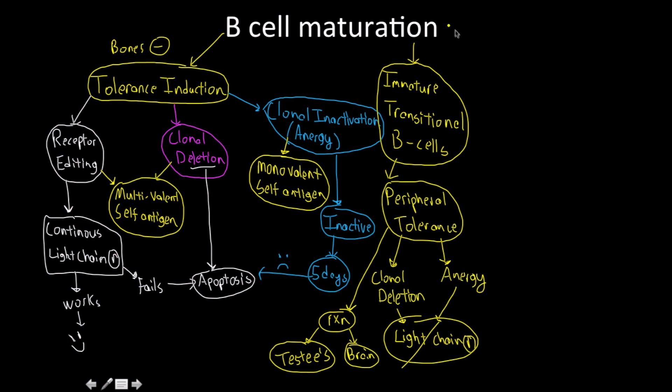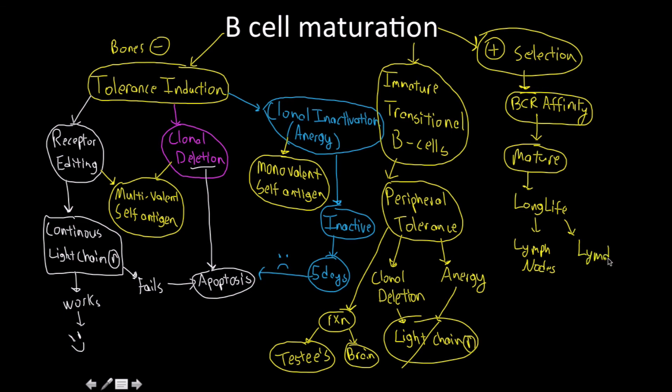The next thing is positive selection. This has to do with B-cell receptor affinity - how strong does it bind, and what are the consequences? How much stimuli is it receiving? If it becomes a mature B-cell, it's going to have a very long life and be constantly recycled through the lymphatic system. A very long life in the lymph nodes and in the lymph itself, being recycled back and forth, in and out.